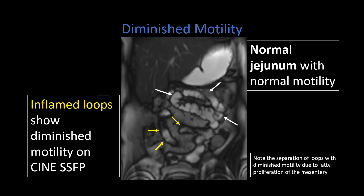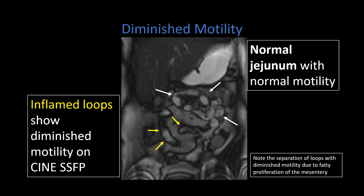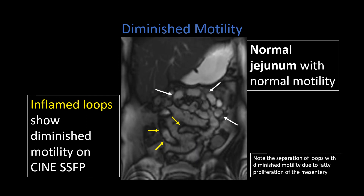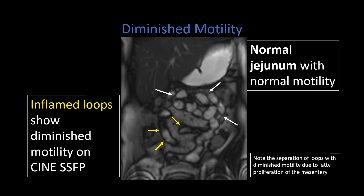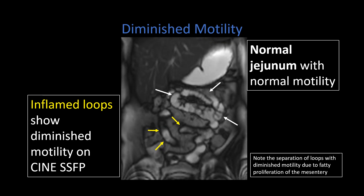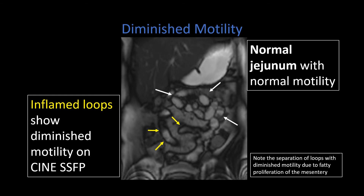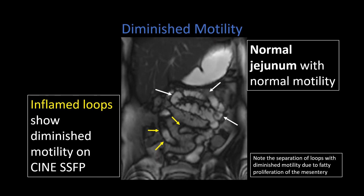Another tool in our toolbox when using MR enterography is cine imaging. We can do steady-state free precession cine imaging of the bowel to look for areas of diminished motility. On CTE or MRE, you may see an area of collapsed bowel that looks like luminal narrowing, but it could be a peristalsing segment captured at one moment in time. The cine imaging captures peristaltic activity over time and helps identify abnormal areas. In this example, white arrows point to multiple loops of jejunum showing normal peristaltic activity, compared to yellow arrows pointing to the distal ileum in regions of active inflammation. Also note the mesenteric proliferation or fatty proliferation of the mesentery separating those loops of inflamed bowel.